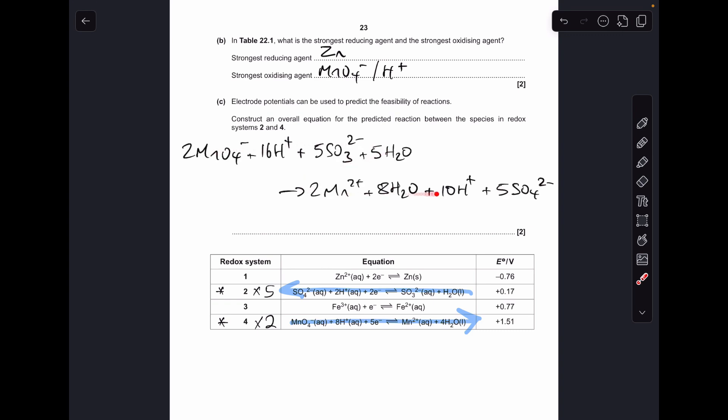So there's the sum of those two equations there. So the next thing we need to do before we can write the final equation is look for common species left and right. And you can see we've got 16 H pluses on the left, and we've got 10 on the right. So we're going to be left with 6 on the left, and H2O is another common substance. We've got 5 on the left, we've got 8 on the right, so we're going to end up with 3 on the right. So the overall equation looks like that.